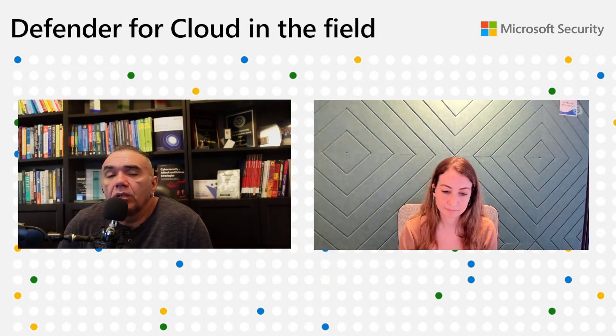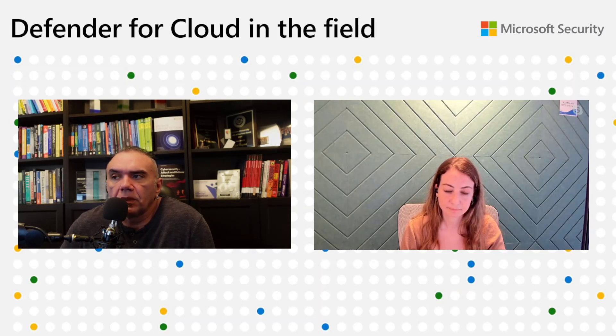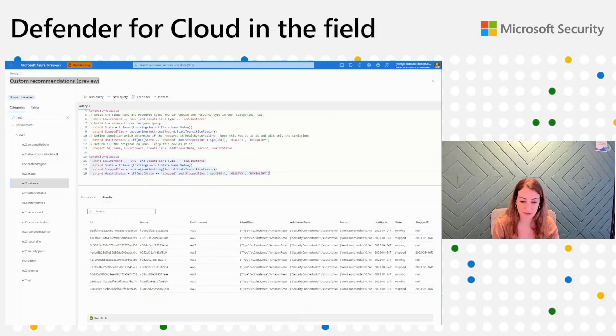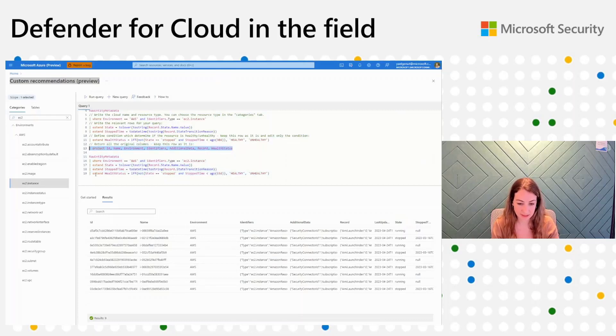Once I create this recommendation, how long does it take to start populating on the dashboard? It's supposed to take a few minutes, and then I will be able to see the recommendation alongside all the built-in recommendations. Is there a final step to save this custom recommendation so it can show up there? Yes, I'll show you how to do that. I always need to add an if statement to determine if the recommendation is healthy or unhealthy. In this case, if the EC2 is stopped and the stop time is longer than 15 days, it will be unhealthy.